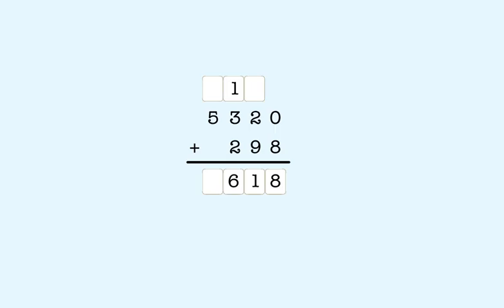Now we have only one number in the thousands place. When you solve addition problems and you have a column where there is only one number, you can treat the empty space as a zero. We know that adding zero doesn't change a number, so we can just bring down the five. So five thousand three hundred twenty plus two hundred ninety-eight is equal to five thousand six hundred eighteen.